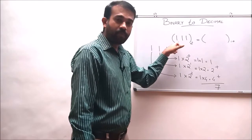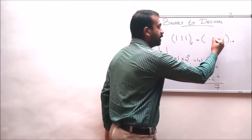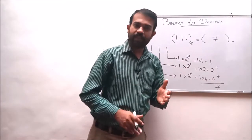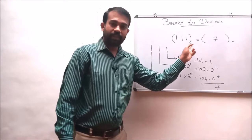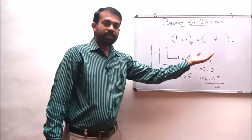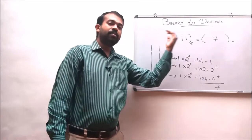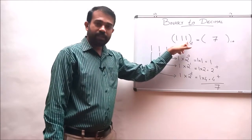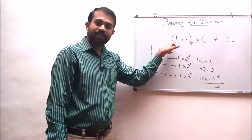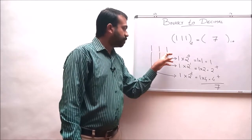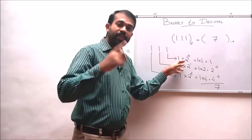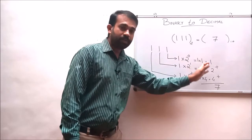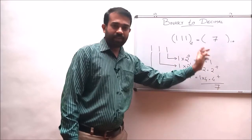So for the binary number 111, the decimal equivalent is 7 to the base 10. To summarize the conversion method: first, identify the digit positions counted from the least significant bit to the most significant bit, starting from 0 with an increment of 1. Second, multiply each binary digit by 2 raised to the power of its digit position. Finally, add all the results to get the decimal equivalent.